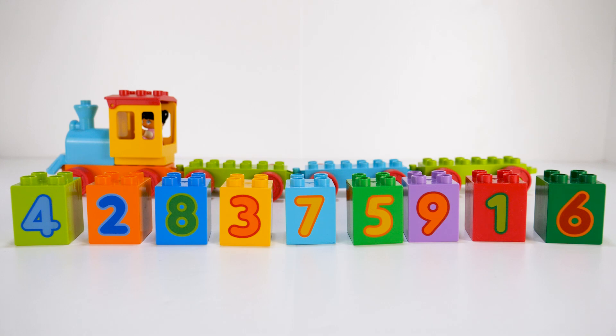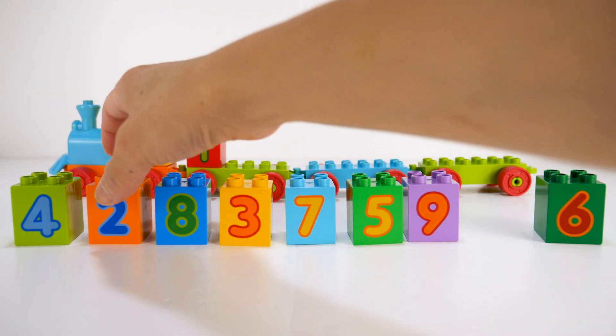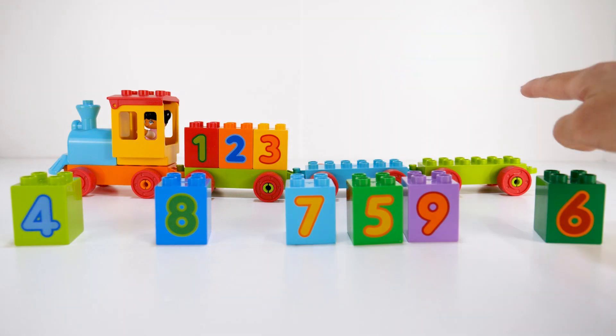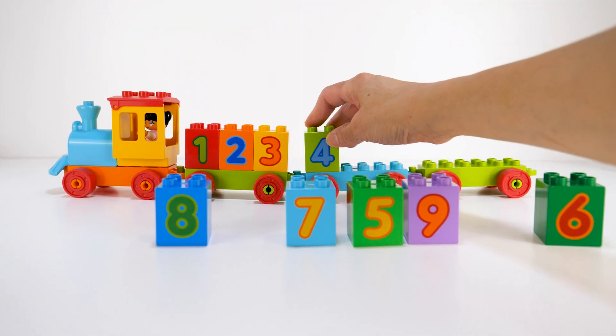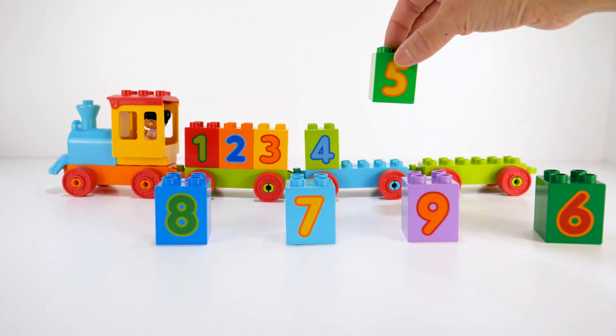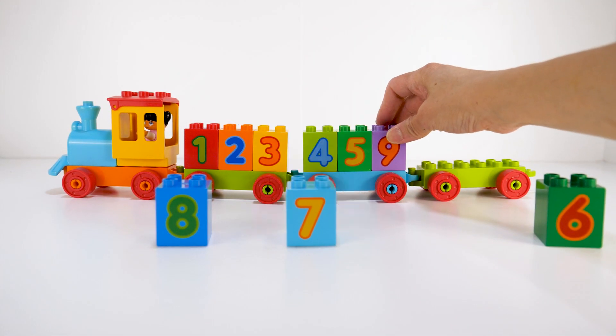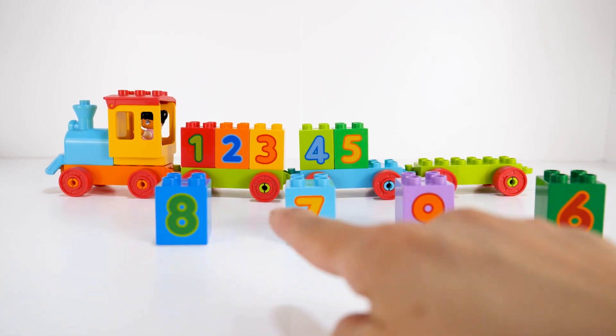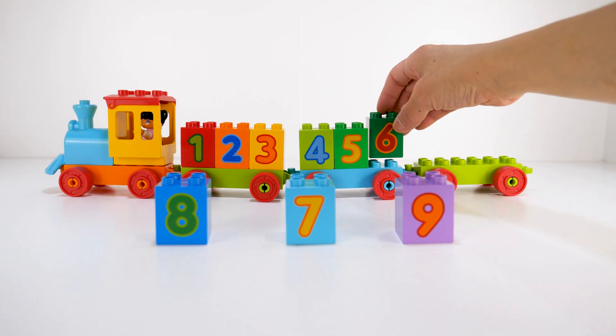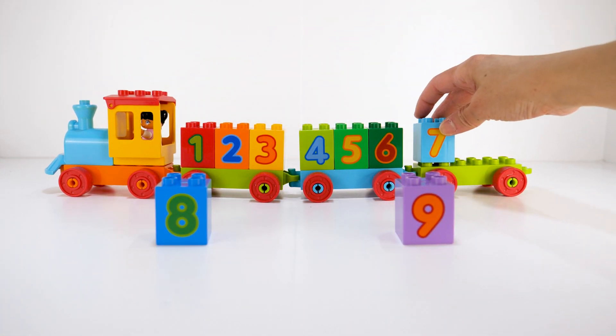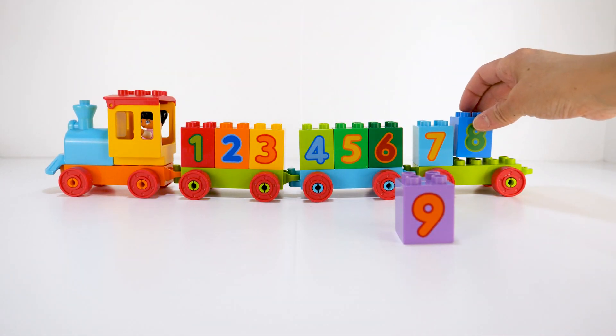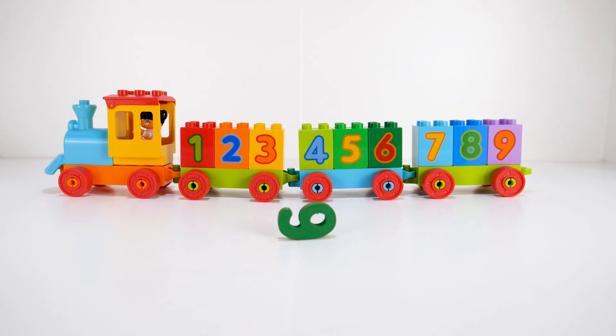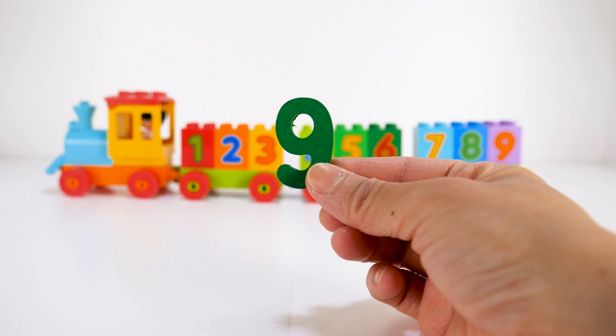Let's arrange these bricks in the correct order starting with one, two, three, four, five, nine. That's not correct. Nine is not after five. That's right, it is six. Seven, eight, nine. Oh wow! We got another puzzle piece, it's the number nine.